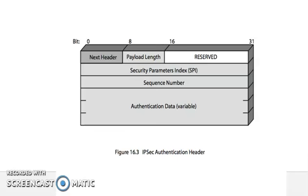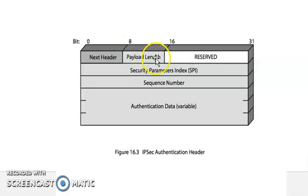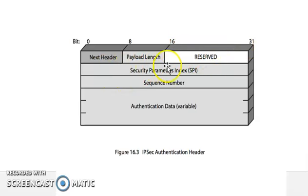The authentication header format contains the following fields: the next header field occupies bits 0 to 8, payload length is from bits 8 to 16, reserved is from bits 16 to 31. Then there is the security parameter index, the sequence number, and the authentication data field which is variable in length. This is the IPsec authentication header architecture.